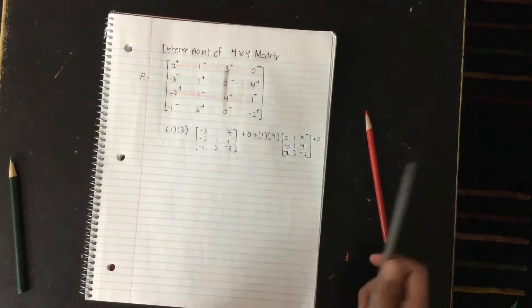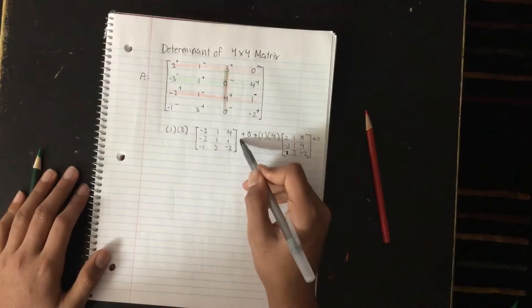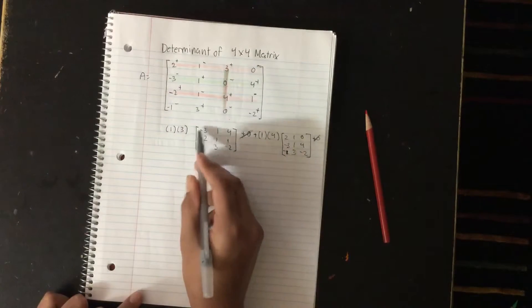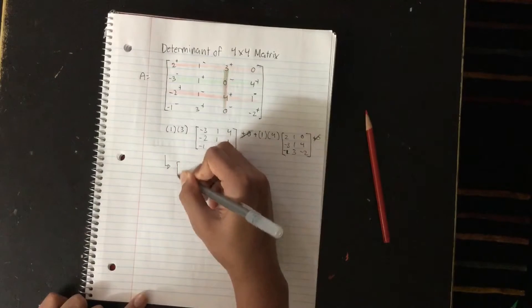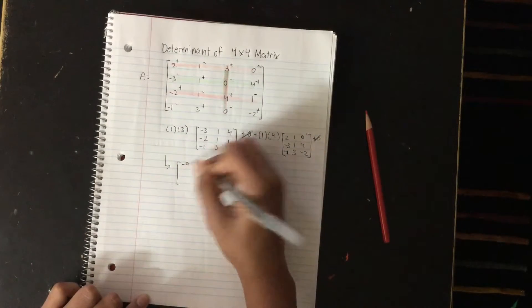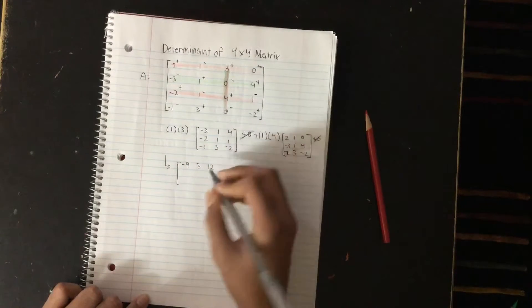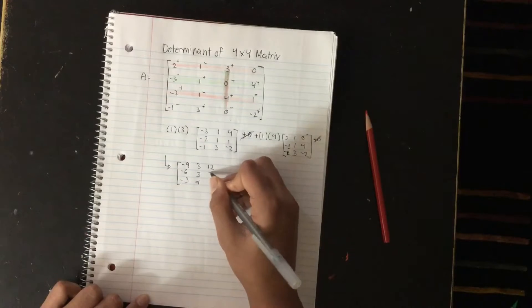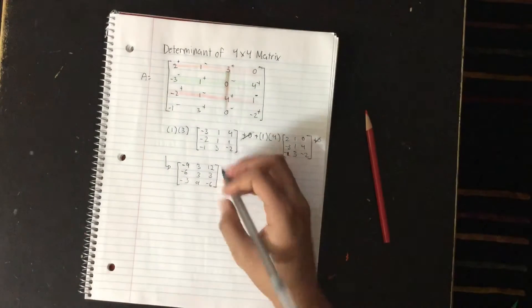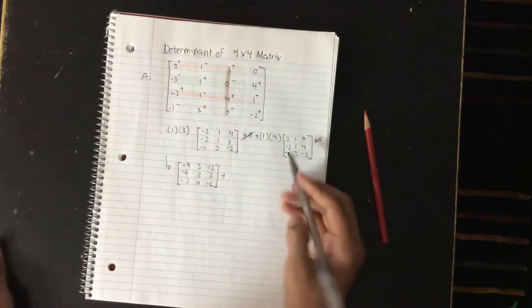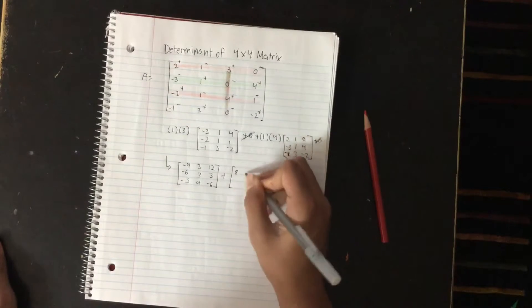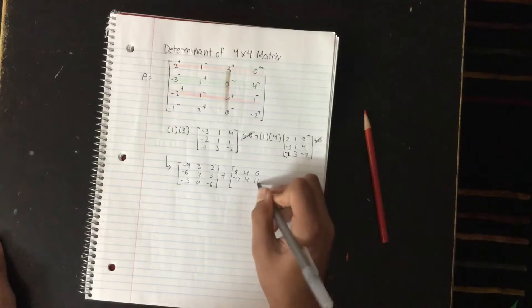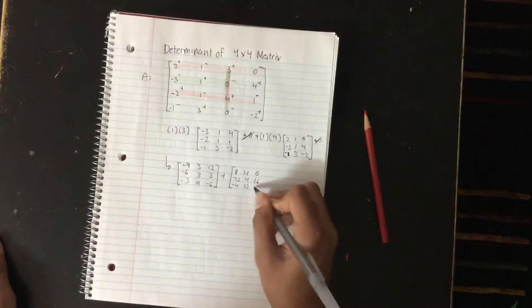Now we want to simplify this. First we can cancel out the zeros — they're just taking up space. Next you want to multiply the scalar by the matrix. So multiplying negative 3 by everything in the first matrix gives: negative 9, positive 3, 12, negative 6, negative 3, positive 3, 9, positive 3, and negative 6. Then put down a plus sign and multiply 4 by everything in the second matrix: 8, 4, 0, negative 12, 4, 16, negative 4, 12, and negative 8.